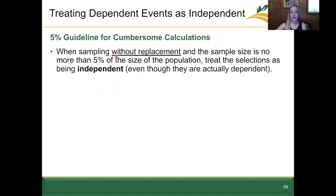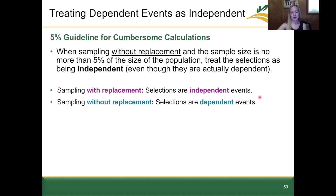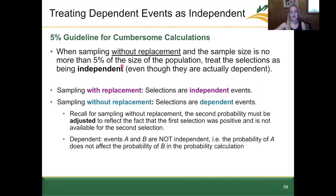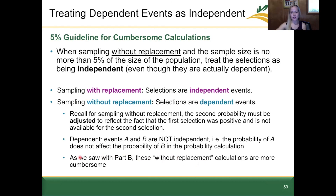This leads to the five percent guideline for cumbersome calculations. When sampling without replacement, we normally have to adjust the denominator each time. However, when the sample size is no more than five percent of the size of the whole population, we can treat those selections as independent — even though they technically are dependent. This makes the calculations less cumbersome. With this guideline, we can assume events A and B are independent and treat them as with replacement.